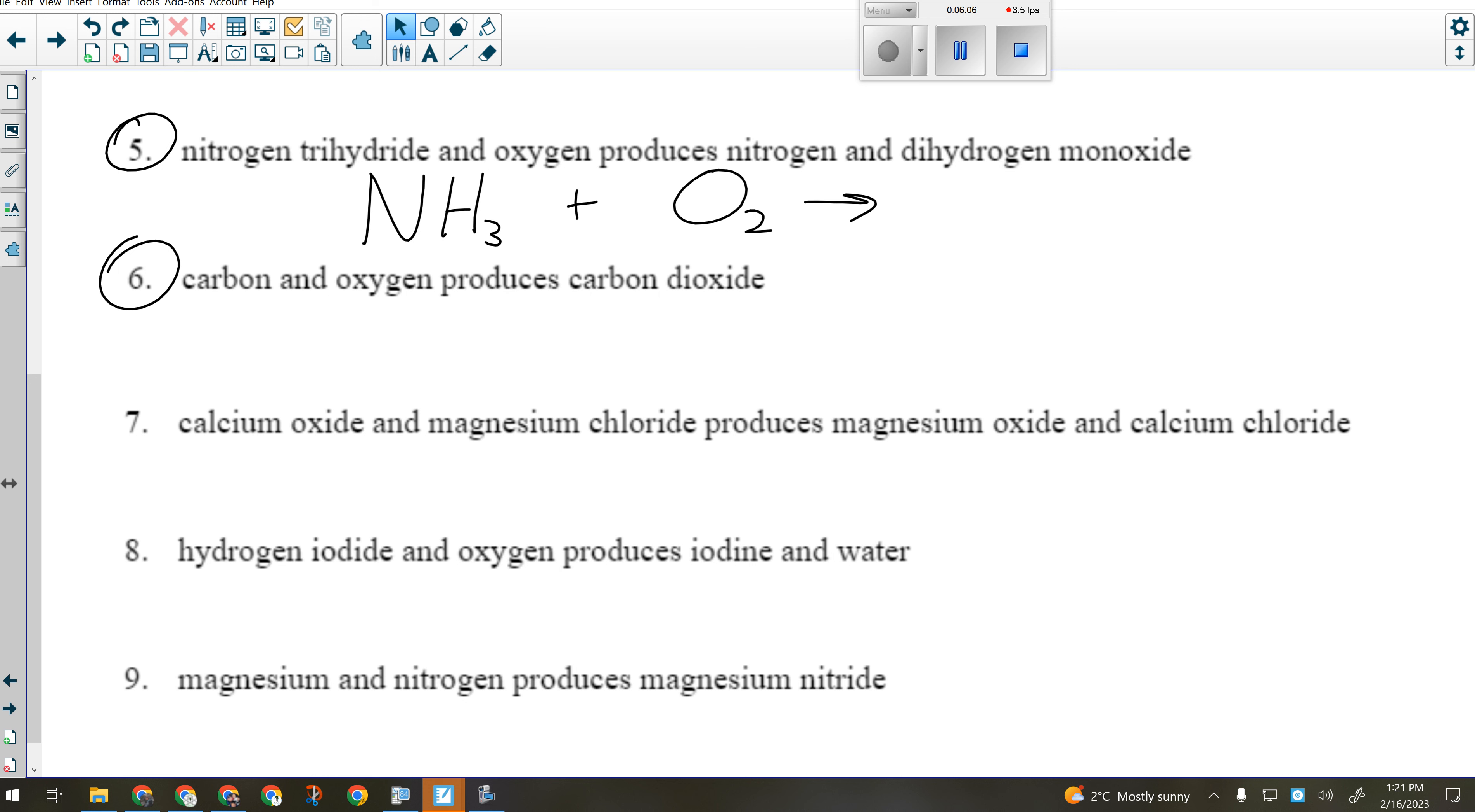Produces nitrogen and dihydrogen monoxide. So what does nitrogen look like when it's by itself? And what's dihydrogen monoxide? Yeah, water. H2O.